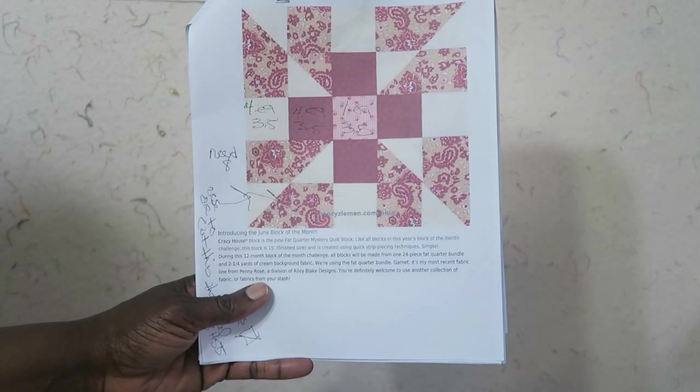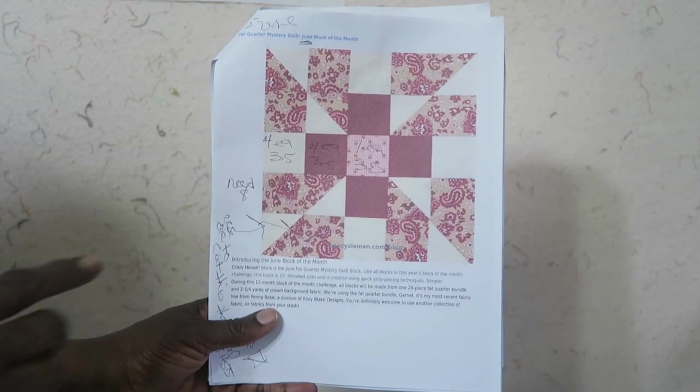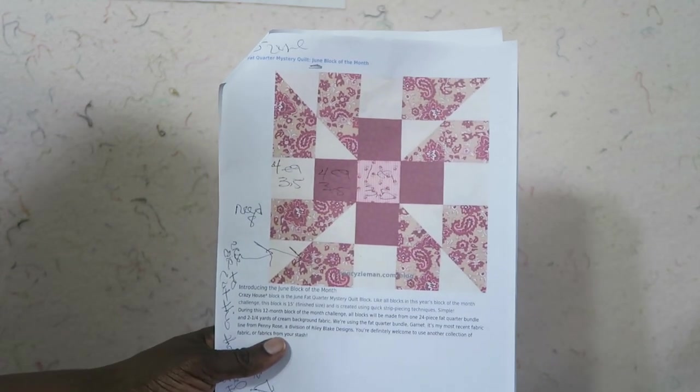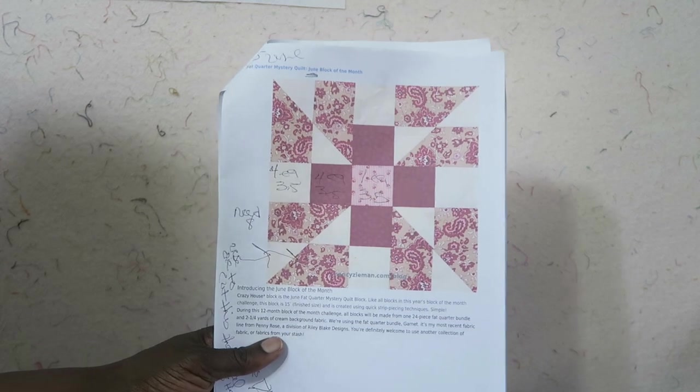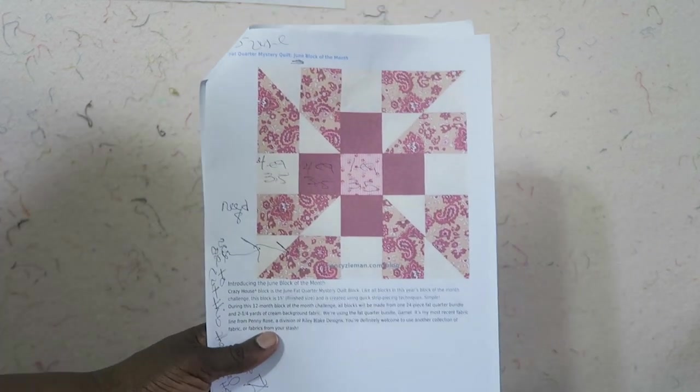So I decided that I was going to cut that shape out with my AccuQuilt gold die. I happen to have the chisel die that is 3.5 by 6.5 inches. Let me show you that.